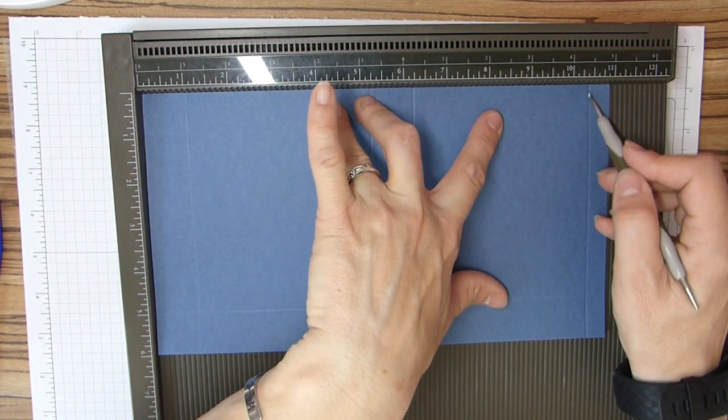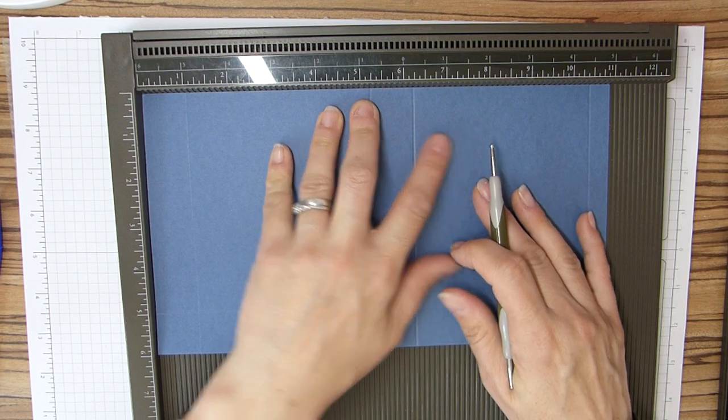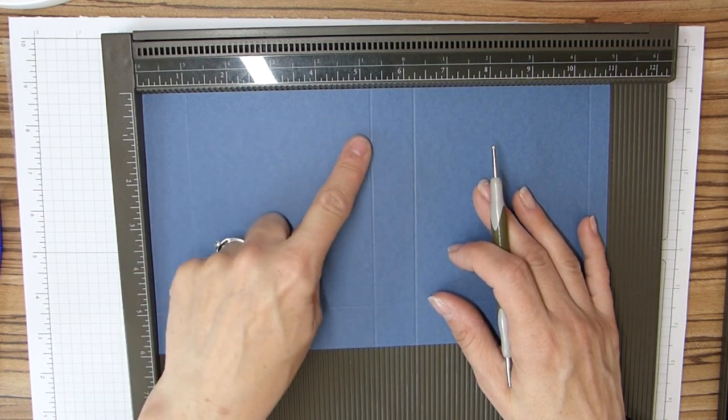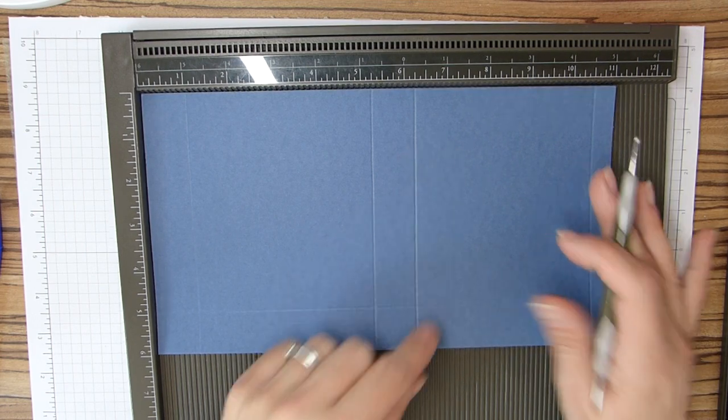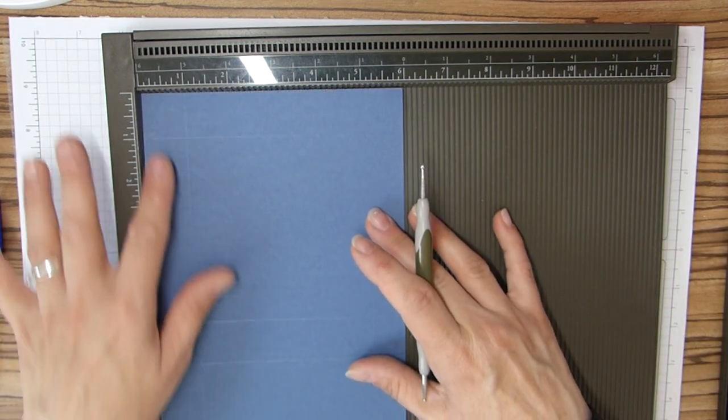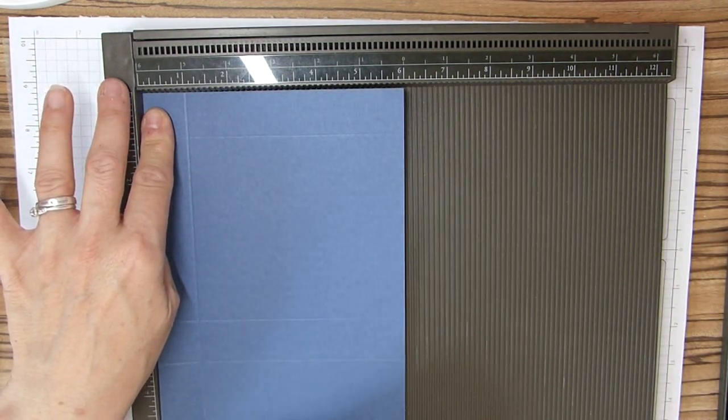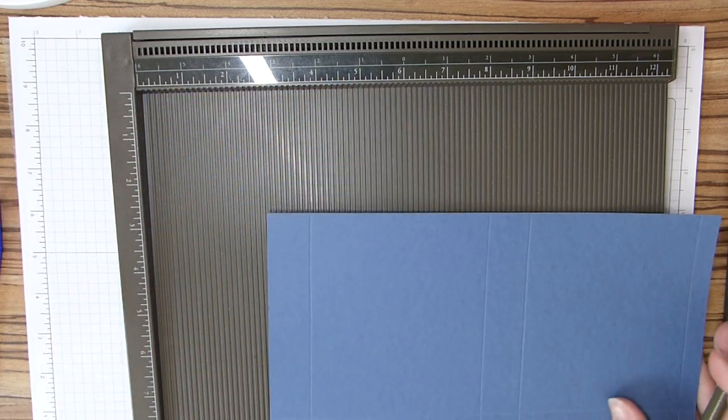and 10 and a half. And in centimeters that will be 2 and a half, 13 and a half, 16, and 27 centimeters. Then we're going to rotate it and score at 1 inch, which is 2 and a half centimeters.